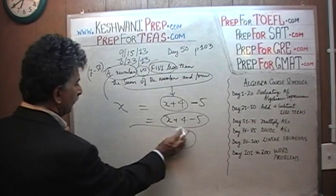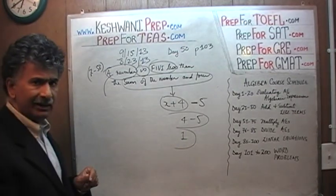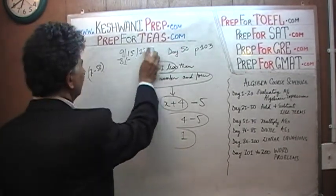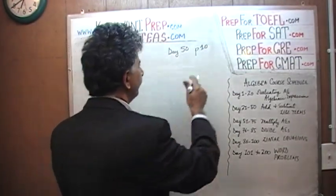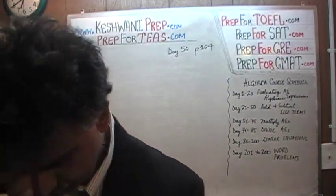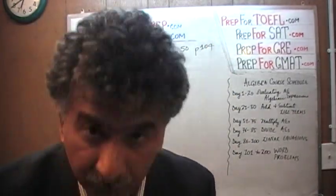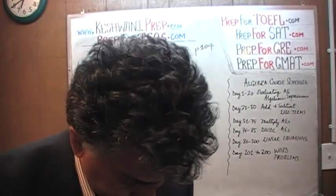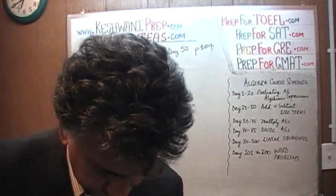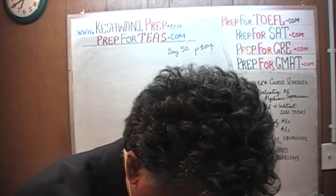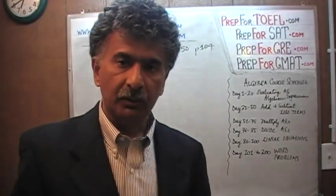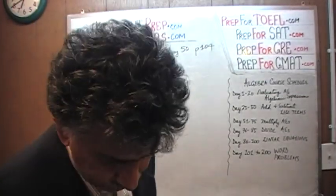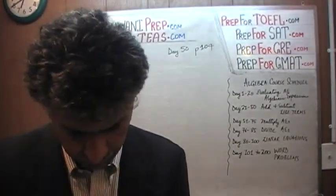A number cannot be one less than itself — no number can be one less than itself. It is illogical. Page 104. And if you have watched all the other videos from day one, you know all the other misprints, because as I encounter a misprint I share that with you. We are on page 104 now, doing 2.59. Let's take a look at it.